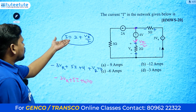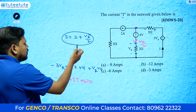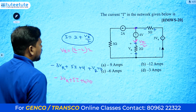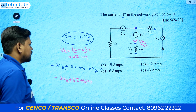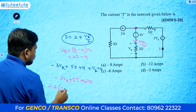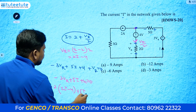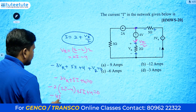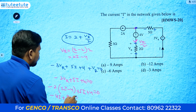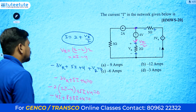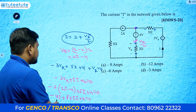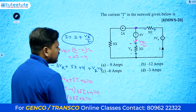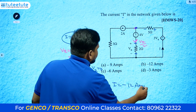Substituting i = 2 + vr/2 into the loop equation, we replace vr with 2*i minus 4 (from the KCL relation). So: minus 2*(2i - 4) + 5i + 4 = 0, giving minus 4i + 8 + 5i + 4 = 0, so i = minus 12 amperes.